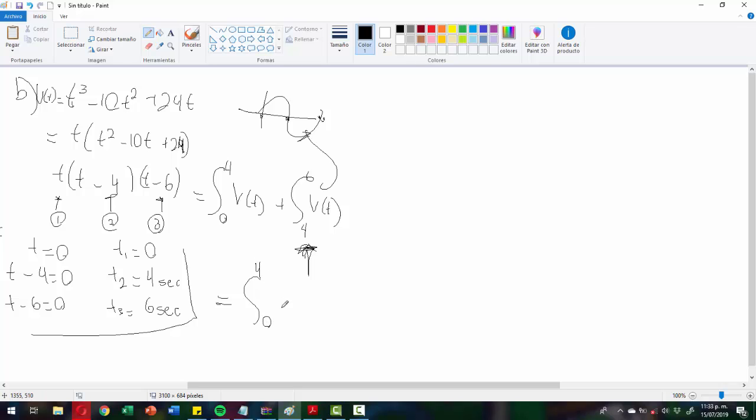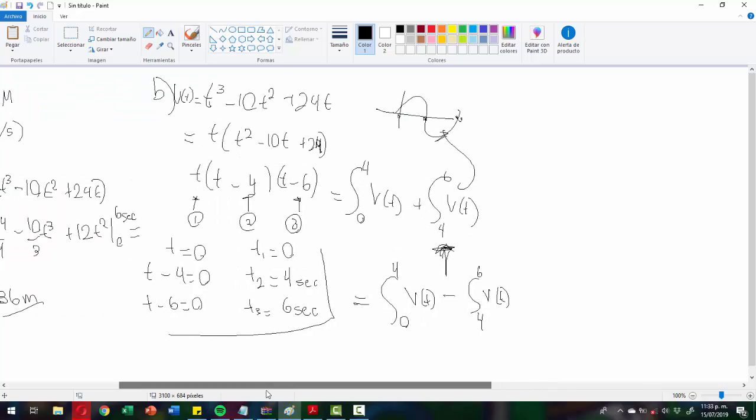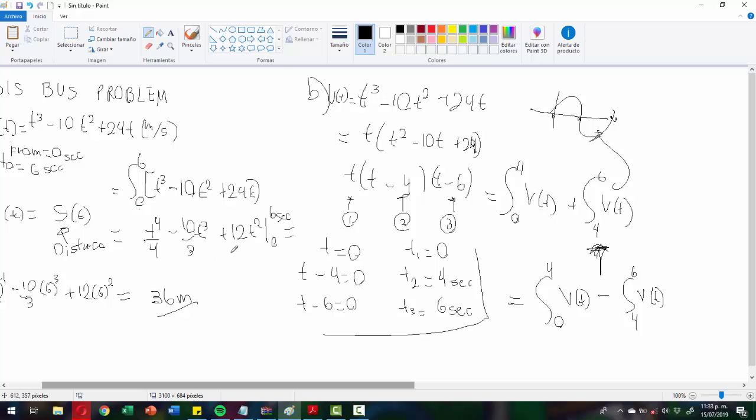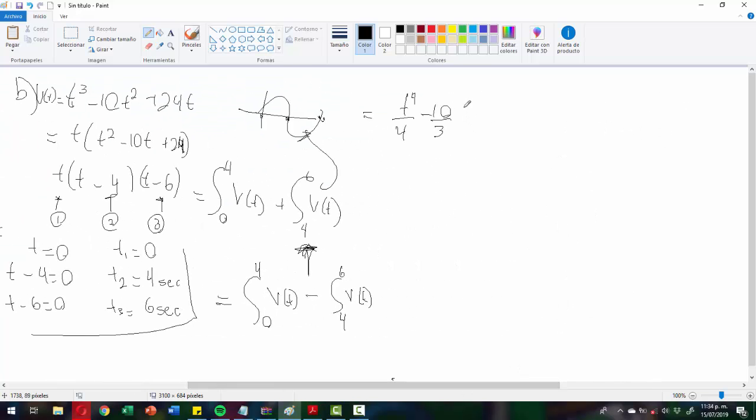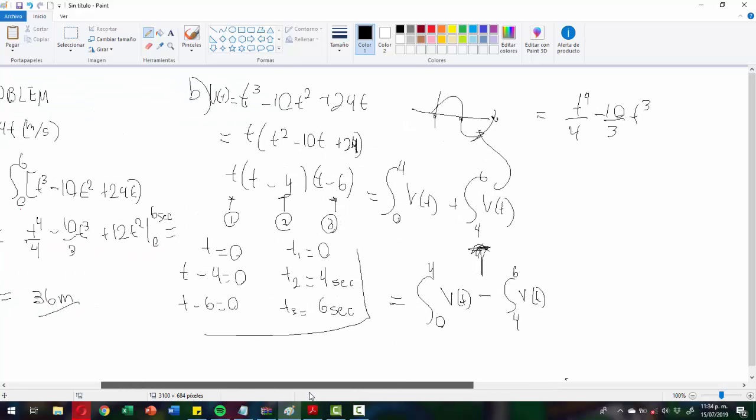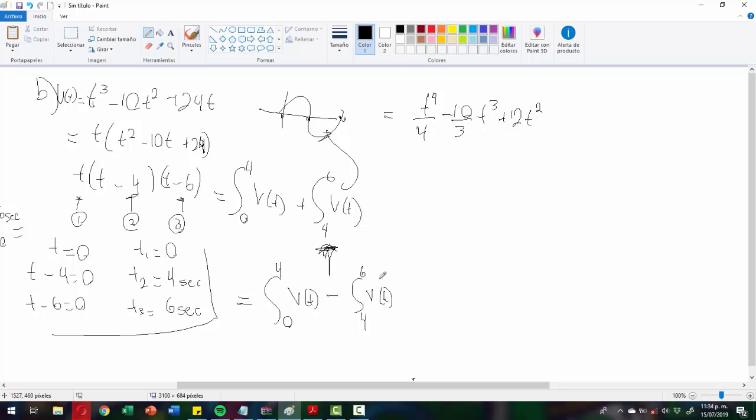Well, there are a couple of theorems that we saw in class that give us that chance, or we just simply change the sign of it, keeping the interval numbers in the same value. So we already did that integral. Remember that the integral is going to be this one. So let's use it now because we know it. So the first one is going to be t⁴/4 minus 10/3·t³ plus 12t² from 0 to 4, minus the second one, which is t⁴/4 minus 10/3·t³ plus 12t² from 4 to 6.